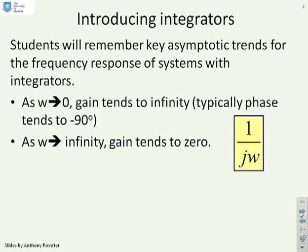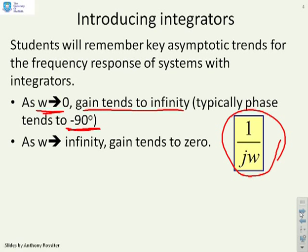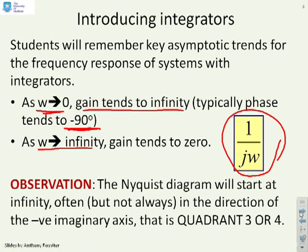Next then, what about an integrator? What does an integrator tell us? Well, if I do the frequency response of an integrator, I'm going to get this function here, 1 over j omega. Now clearly, as omega tends to zero, the gain tends to infinity because I'm going to get 1 over omega. The phase of an integrator is always minus 90 degrees because I've got a 1 over j. As omega tends to infinity, the gain will tend to zero.